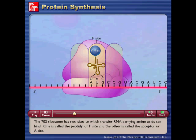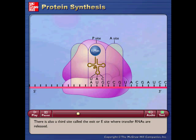One is called the peptidyl, or P-site, and the other is called the acceptor, or A-site. There is also a third site called the exit, or E-site, where transfer RNAs are released.